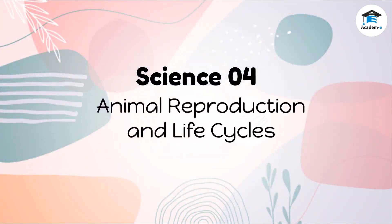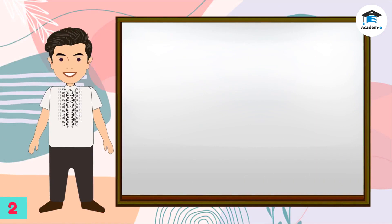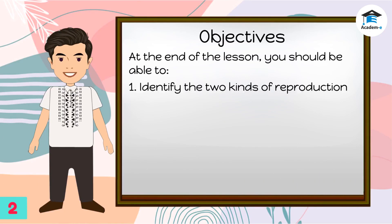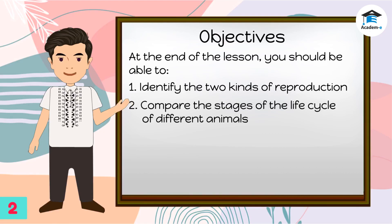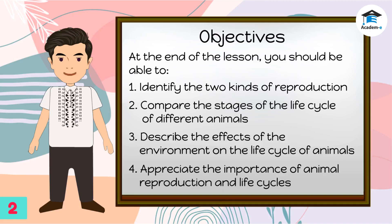Science 4: Animal Reproduction and Life Cycles. At the end of the lesson, you should be able to identify the two kinds of reproduction, compare the stages of the life cycle of different animals, describe the effects of the environment on the life cycle of animals, and appreciate the importance of animal reproduction and life cycles.